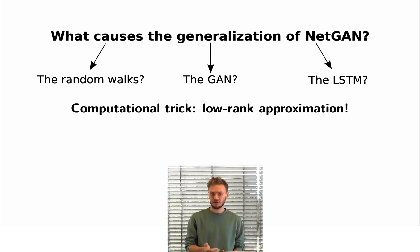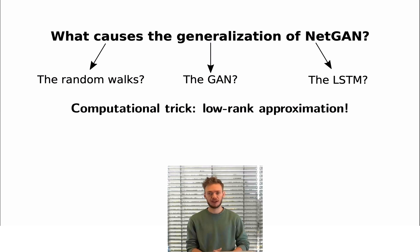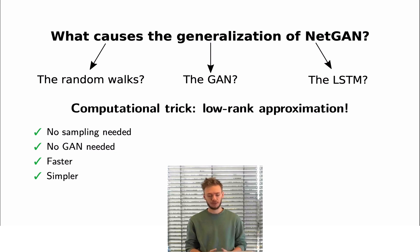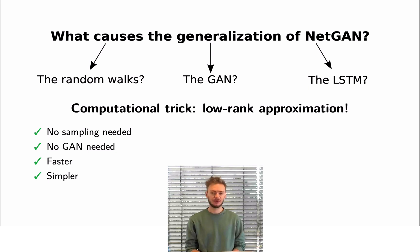After identifying this bias, we can apply this low rank approximation directly to formulate a vastly simplified graph generative model. This new model needs no sampling anymore, it doesn't even need to train a GAN, and it runs in seconds instead of hours. If you got interested, please read our paper, which we link in the comments.